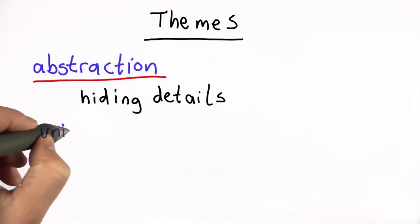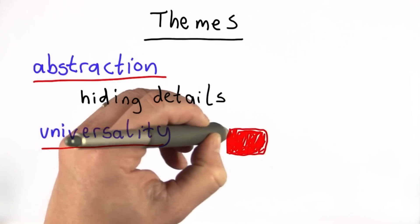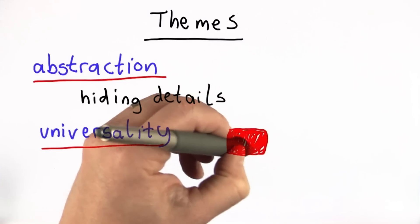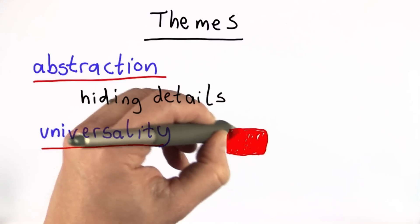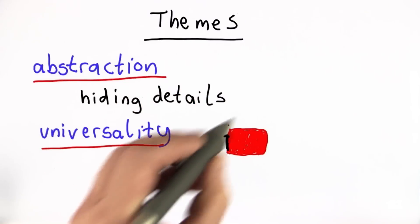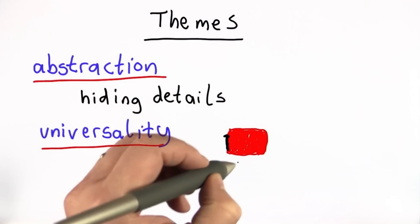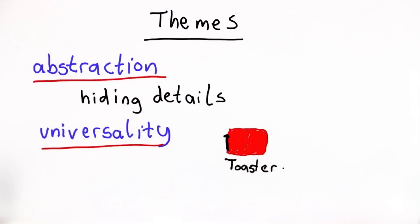The second main theme is universality. And we talked about this early in the class, about how computers are universal machines. I want to show you how much better I've got a drawing. If you thought my drawing of a toaster in unit one was not recognizable, I hope you can see how much better I can do now. This is a toaster. And a toaster is very different from a computer.